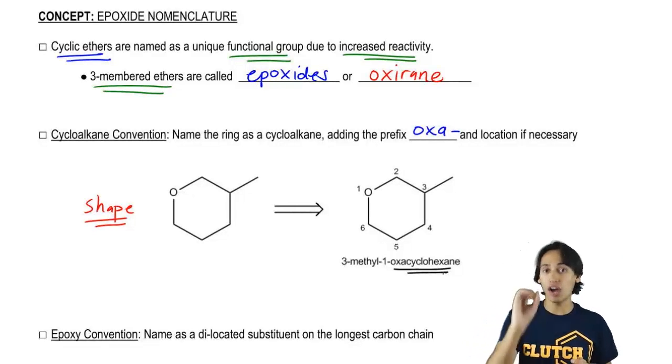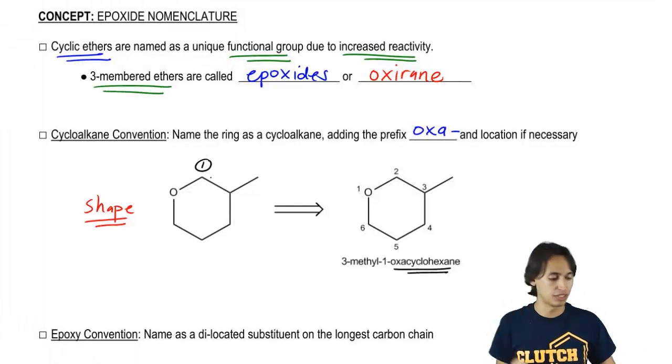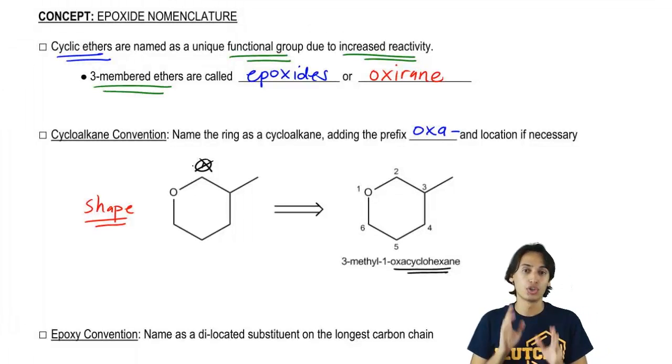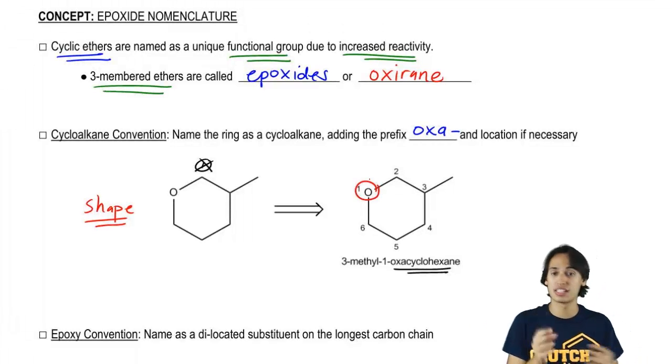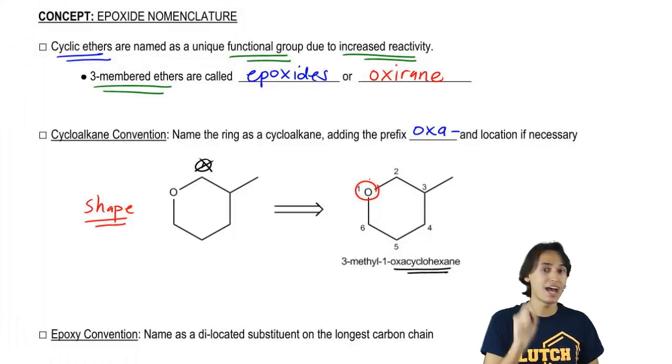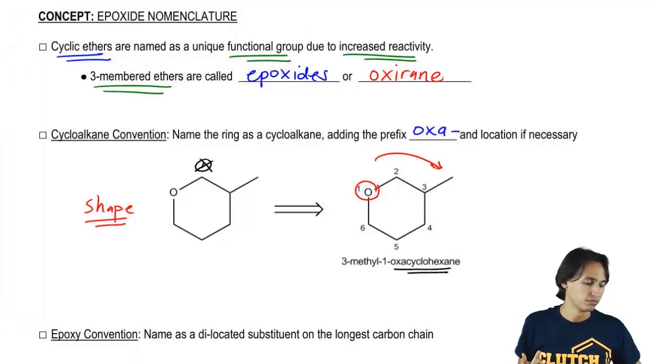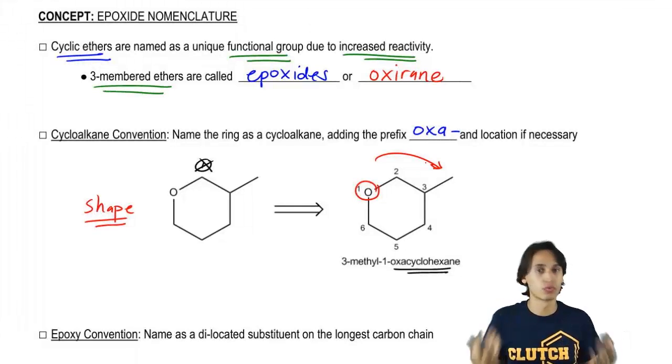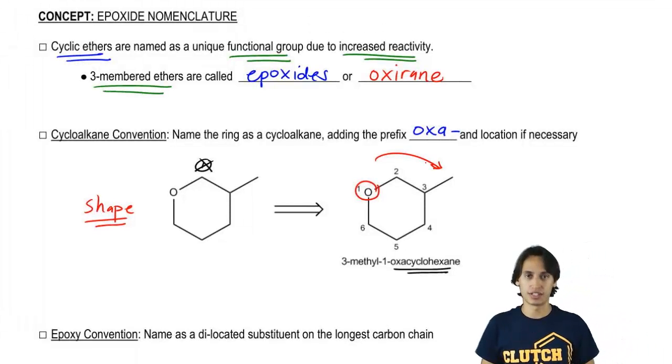Well, it turns out that the oxygen is always going to get your one spot. So when I put the one here, that didn't really count. That wasn't true numbering. The way that I should really number it is starting from the oxygen because that's the highest priority atom inside the ring. And then obviously I should number to give the lowest overall number or to go to the next highest priority, et cetera. So this would be 3-methyl-1-oxacyclohexane. Cool so far?